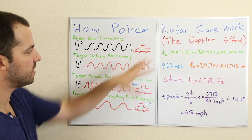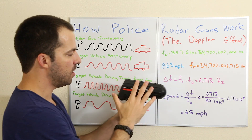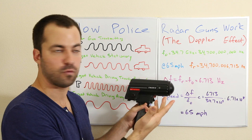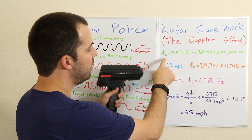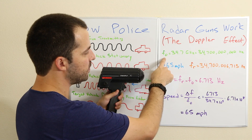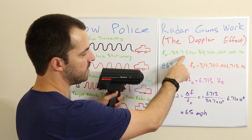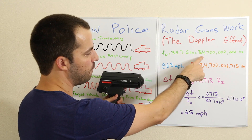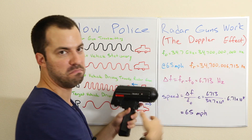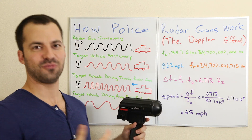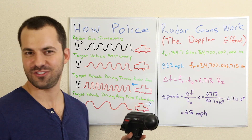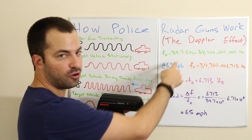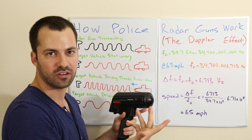So let's take a look at some math and how that works. With this gun, we know it's a Stalker gun designed for 34.7 GHz. So the original frequency that's being transmitted is 34.7 GHz, or 34,700,000,000 Hz — a really big number. To simplify things, we just say 34.7 GHz.